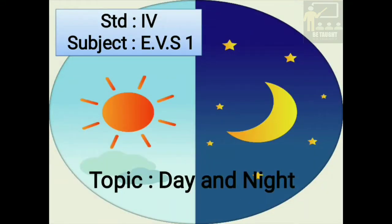Hi kids! Can you see this picture on the screen? When we see the sun in the sky, we say that it is day. And when we see the moon in the sky, we say that it is night. So today in EVS 1 for standard 4, we are going to learn the lesson Day and Night.